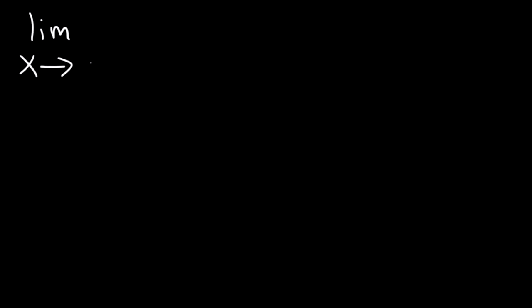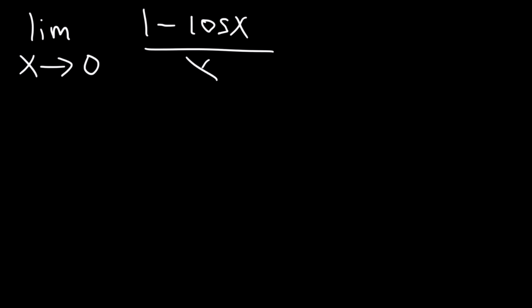There's another formula that you need to know: the limit as x approaches 0 of 1 minus cosine x, divided by x. This is equal to 0.